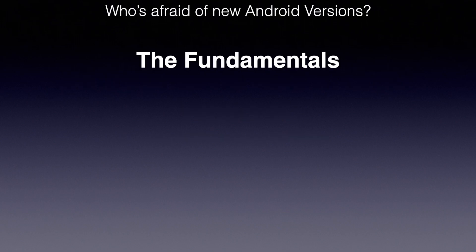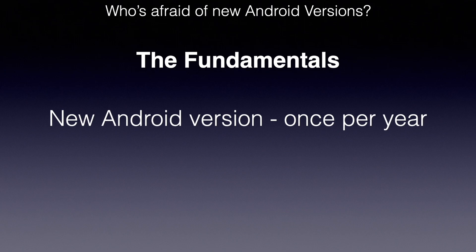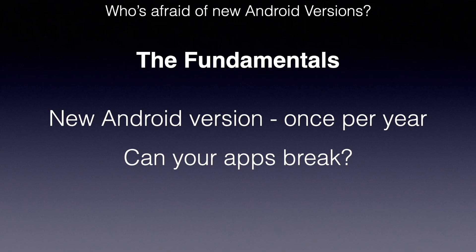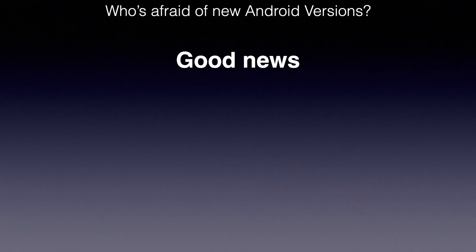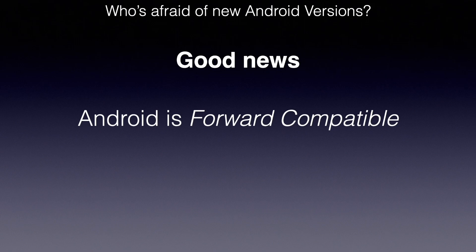First, let's start with the fundamentals. You find out that a new Android version for Android smartphones is publicly available. Remember, we have a major Android release once per year. Should you now worry about how your apps will work in this new Android version? If you own a Google Pixel, which is historically the device that receives the update the day it becomes available, are you in for unpleasant surprises? Can your apps break, or in general, not work perfectly on newer versions of Android? This is super important for our peace of mind. But I'm here to give you good news today — Android is forward compatible.